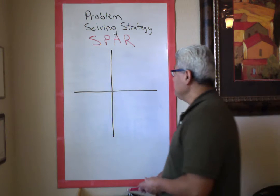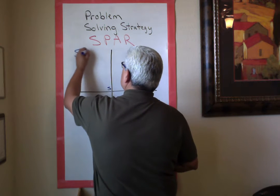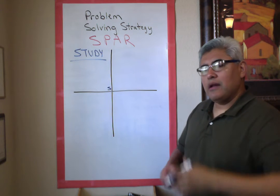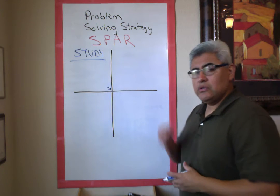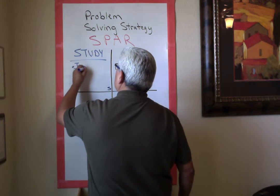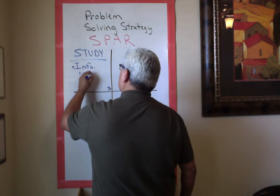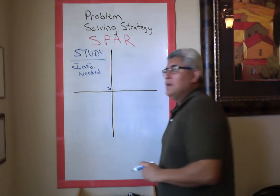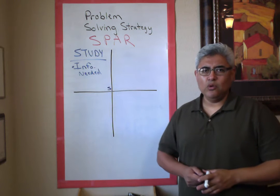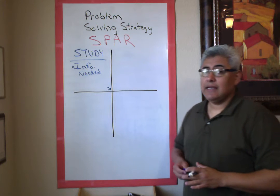The first step is S, which stands for Study. We study the problem - we look at it, read the problem two to three times, and get the information we need. We get the info that is needed. We can also omit information that you don't need. Just don't pay attention to it because it can get you confused.